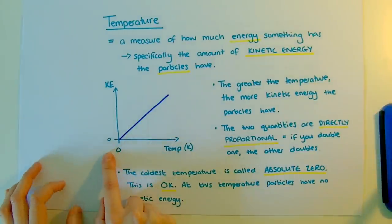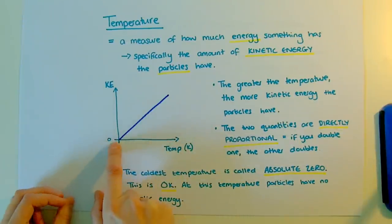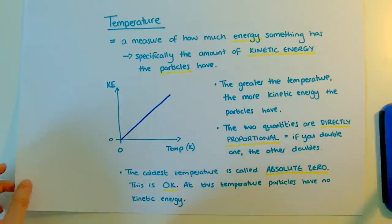As this graph shows, there is a coldest temperature that is possible: zero degrees Kelvin. That's called absolute zero. At this temperature, the particles have no kinetic energy, which means theoretically they're not moving at all.